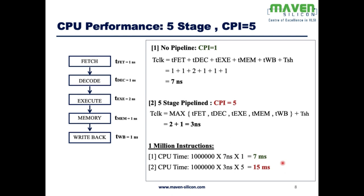Let's look at different scenarios to understand the impact of frequency and CPI. There are five stages: fetch, decode, execute, memory, and write back. The propagation delay of fetch is 1 nanosecond, decode 1 nanosecond, execute 2 nanoseconds, memory 1 nanosecond, and write back 1 nanosecond.